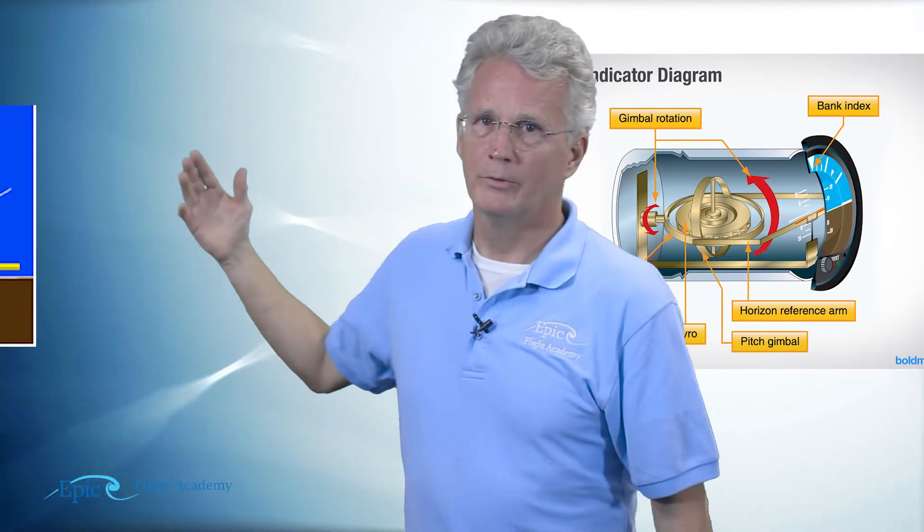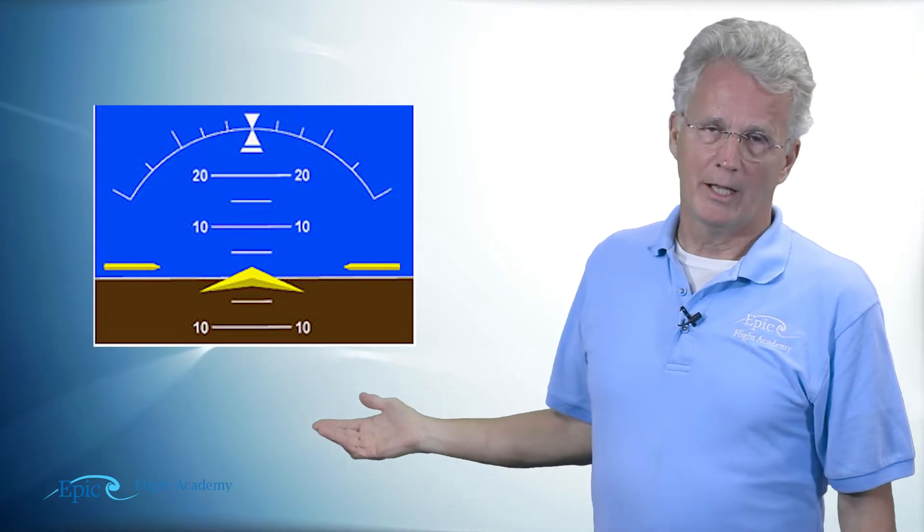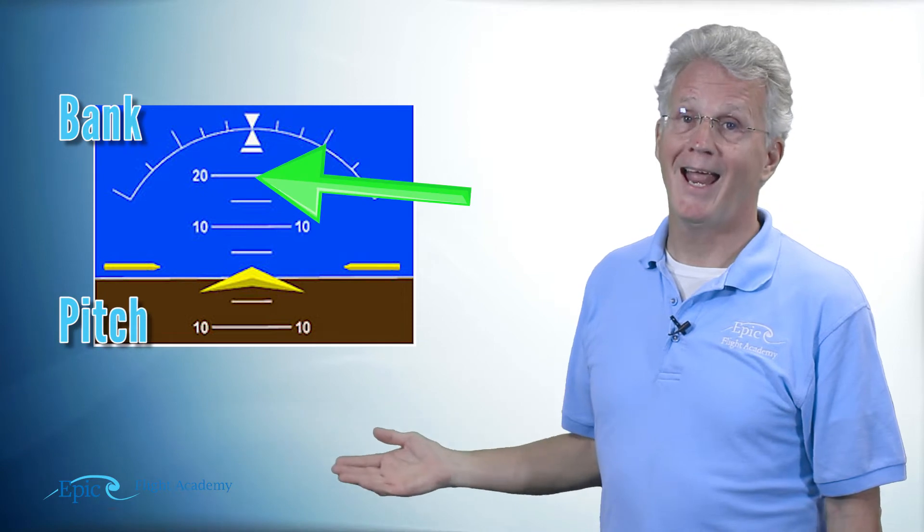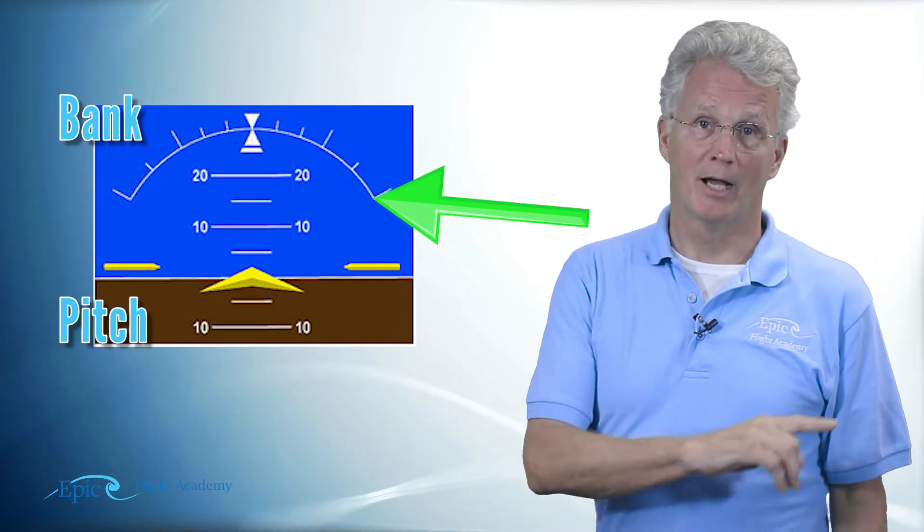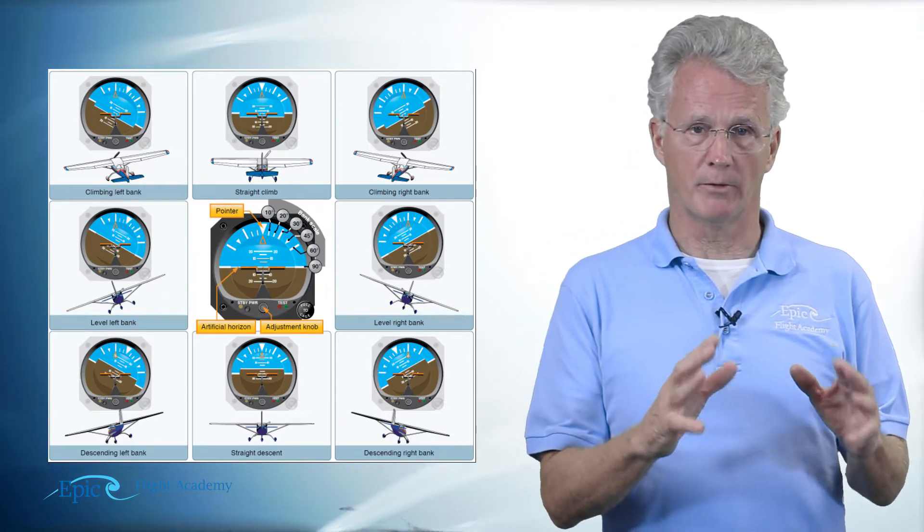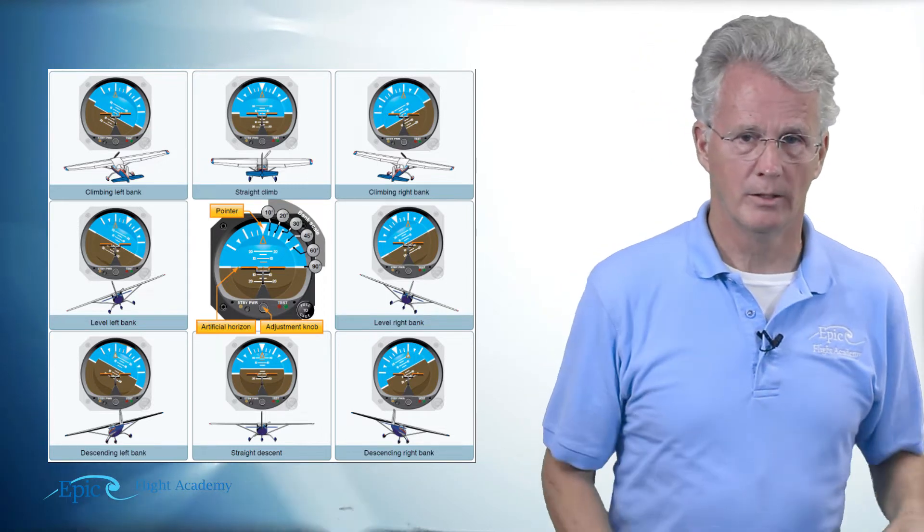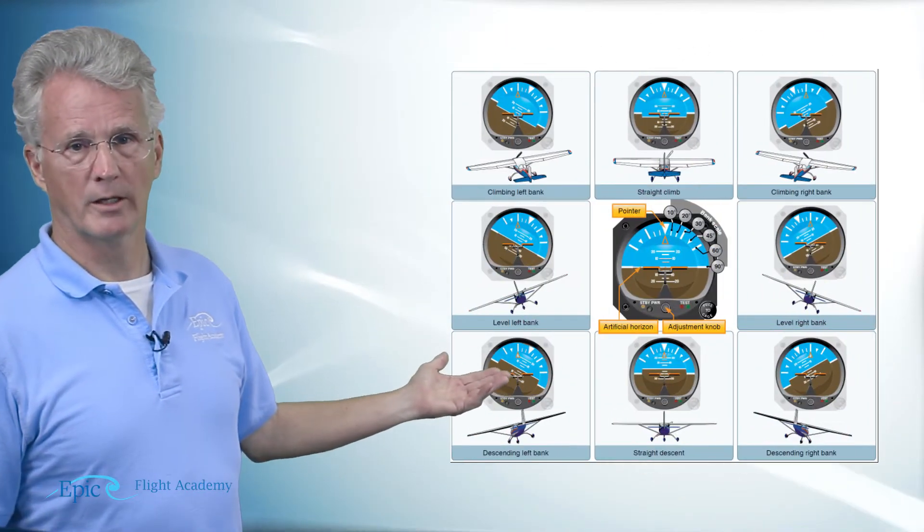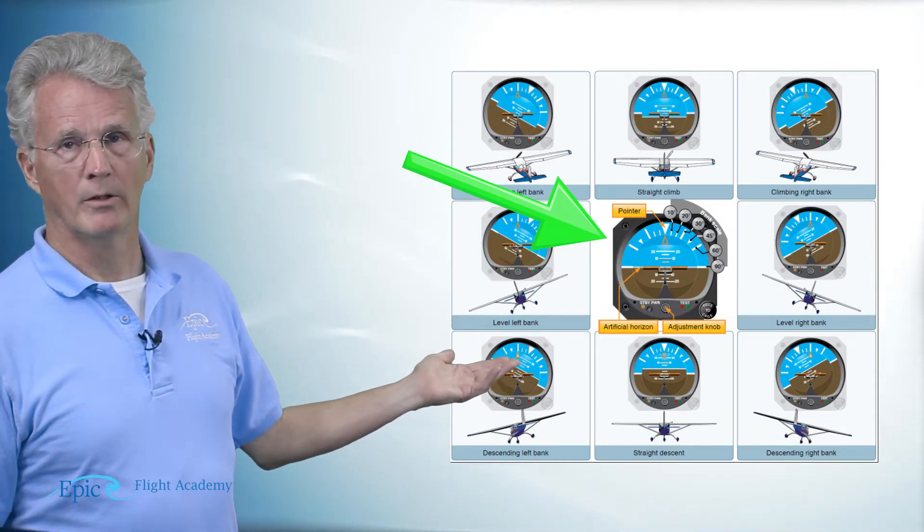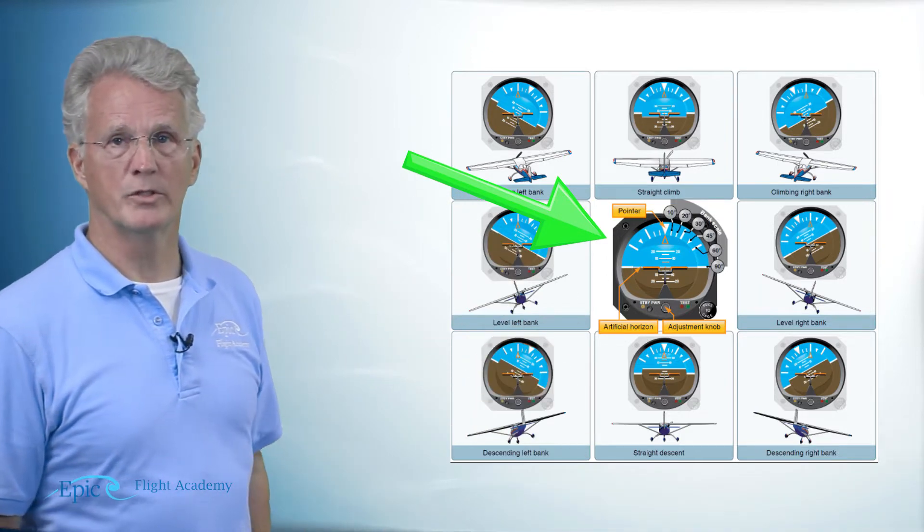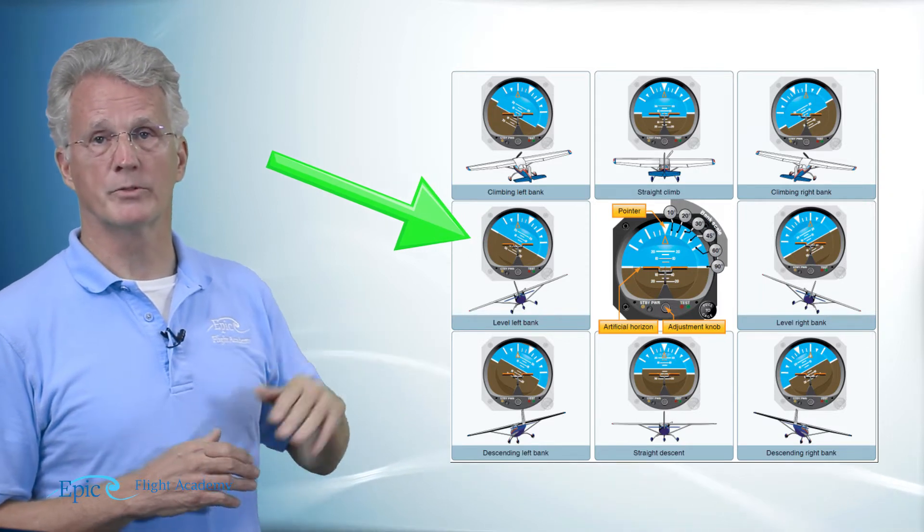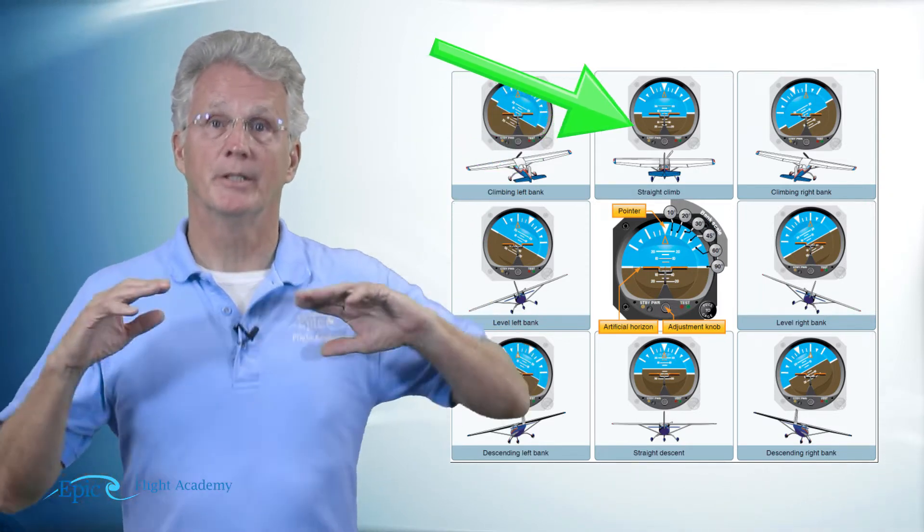What are we talking about? Well, the attitude indicator will indicate both pitch and bank at the same time. In the center of this diagram, straight and level, there's no pitch and no bank. Move around the diagram and you can see in some cases it's bank only, some cases pitch only, and in some cases it's both.